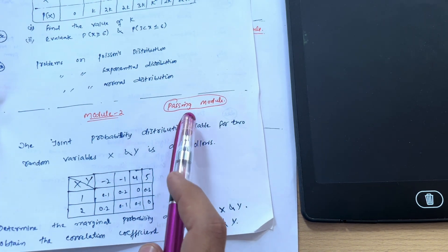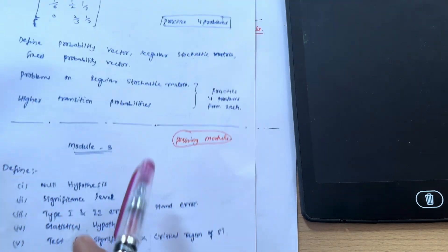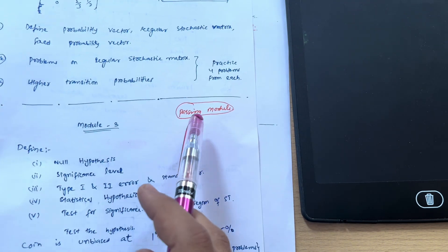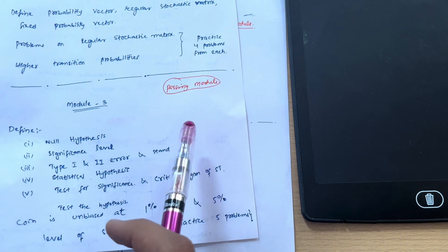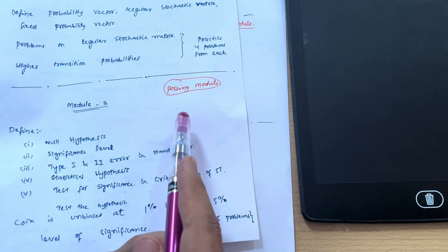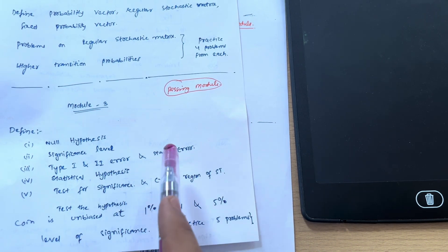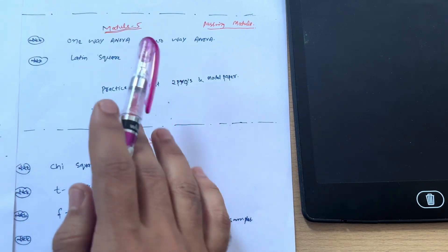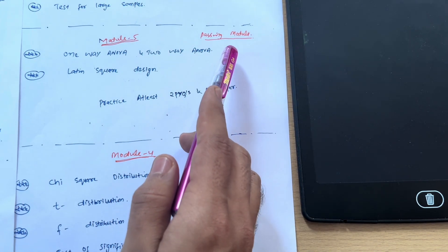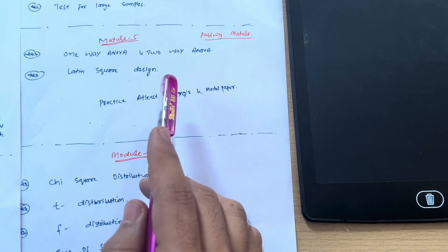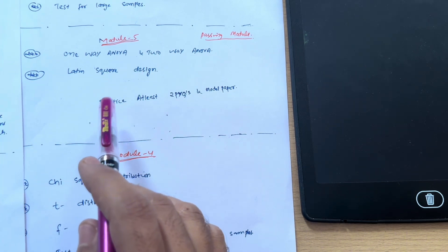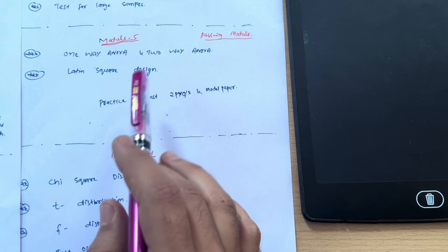Module 2 is a passing module where you can easily get 20 marks. Module 3 is again a passing module where you can get at least 15 to 20 marks. Module 5 is again a passing module in which you can easily grab 20 marks with ease. You have to focus on two questions: Latin square design and ANOVA technique.